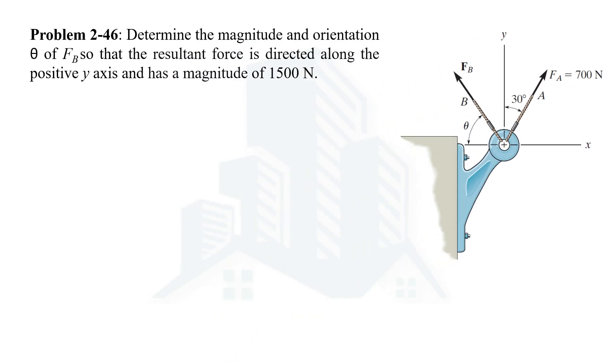In this problem we have been asked to determine the magnitude and direction of the Fb force. We have been given that these two forces are making a resultant of 1500 Newton force which is directed along the positive y-axis. So the resultant is here with magnitude of 1500 Newton.